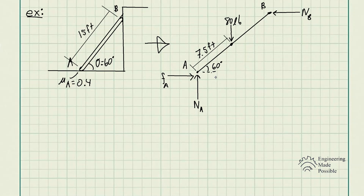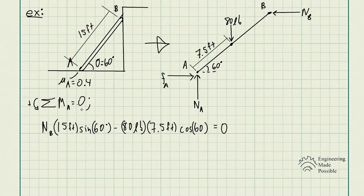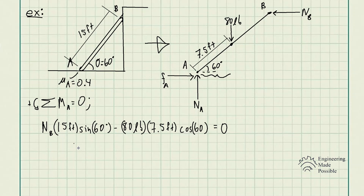We can do a sum of forces along the x and y directions to get the reaction forces. First, the sum of moments with respect to point A equals zero. We have the normal force NB times the perpendicular distance to point A, which is 15 feet times sine 60 degrees. Then we subtract 80 pounds times seven and a half feet times cosine 60 degrees for the moment due to the weight. Solving gives NB equal to 23.09 pounds.